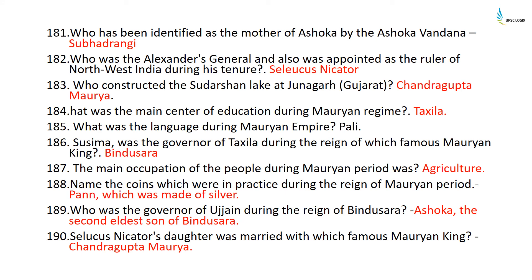Ashokavadana identifies Subhadrangi as the mother of Ashoka. Seleucus Nicator was Alexander's general and was appointed as ruler of northwest India. Chandragupta Maurya constructed the Sudarshana lake at Junagadh in Gujarat. The main center of education during the Mauryan regime was Taxila. The language during the Mauryan empire was Pali. Susima was the governor of Taxila during the reign of Bindusara, and Ashoka was the governor of Ujjain — the second eldest son of Bindusara, the first being Susima.